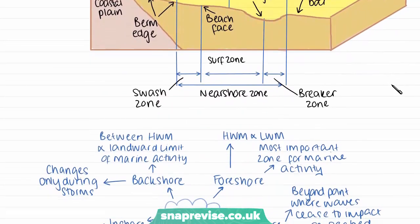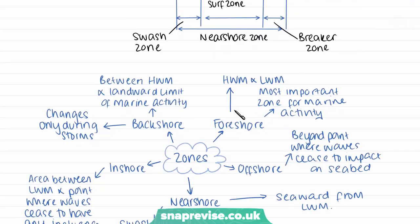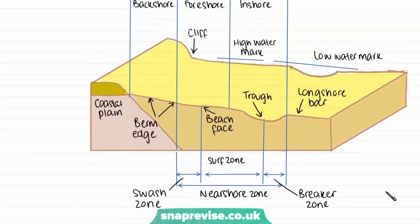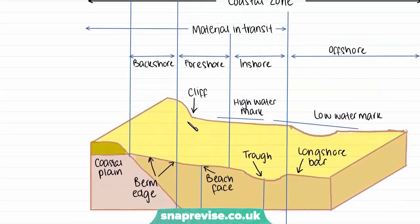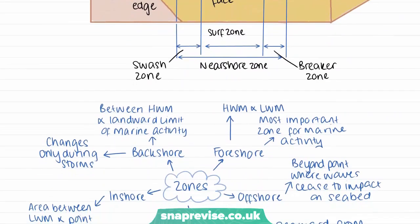Then we have our foreshore, and this region is between the high water mark and the low water mark — the bit forward of the back shore. This is the most important zone for marine activity, where most of the processes are taking place and we're seeing the most change.